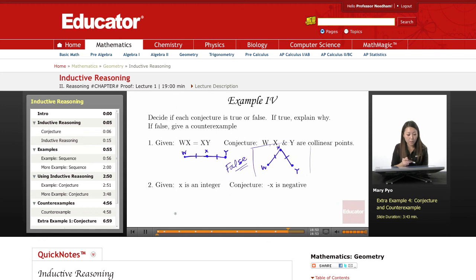The next one, given that X is an integer, conjecture is that negative X is negative. So if X is an integer, some integers: 2, 0, and negative 2. So these are X.